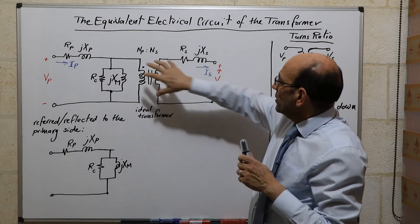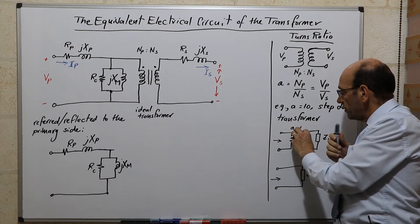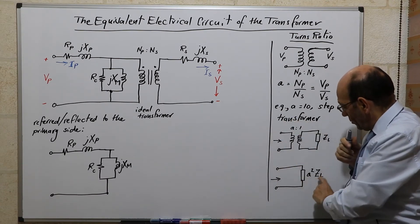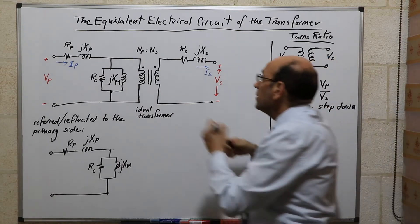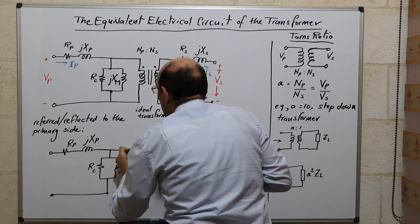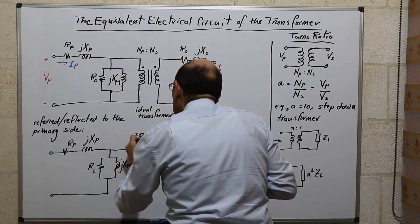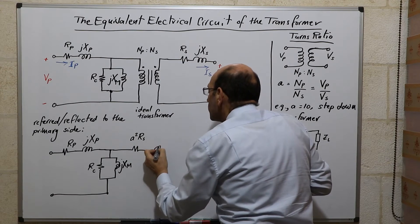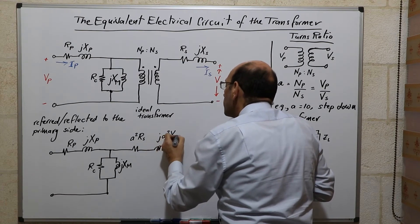Now, the important step here is we will remove this transformer in the same way that we've removed this ideal transformer, and we want to refer everything here to the primary. So as you've seen here, we multiply an impedance by A squared. So these impedances will now be multiplied by A squared. So this becomes A squared Rs, and this becomes j A squared Xs.